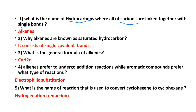Hydrocarbons are categorized as saturated or unsaturated. Saturated means all single covalent bonds between carbons. Unsaturated means the compound has at least one double bond or one triple bond between carbons. Alkanes have all single carbon-carbon bonds, so they are named saturated. The answer: alkanes consist of single covalent bonds only.